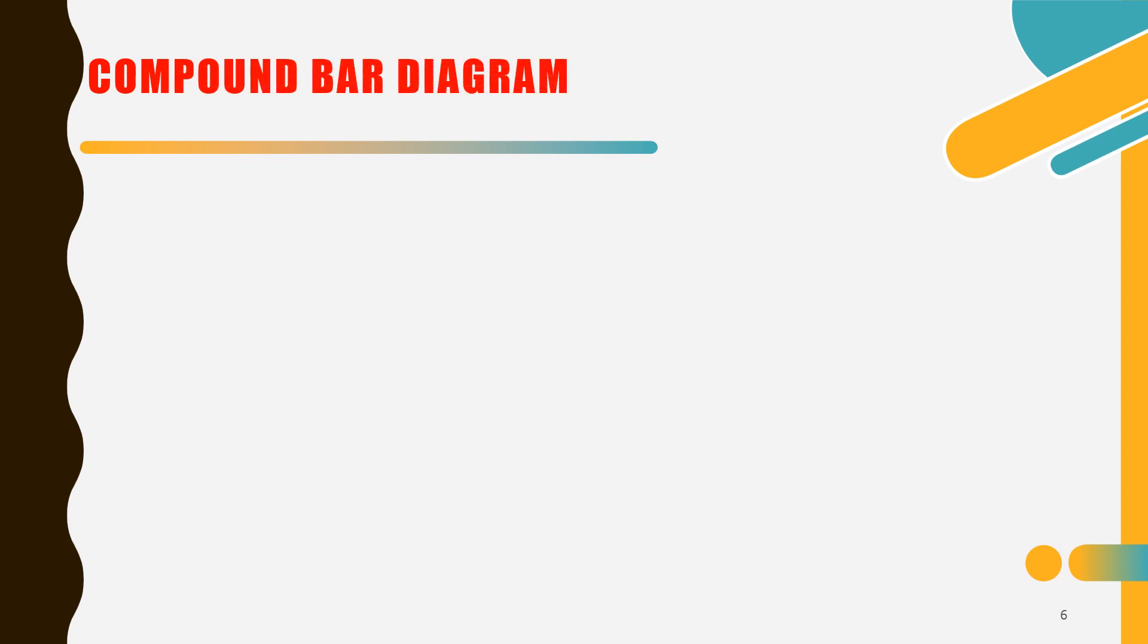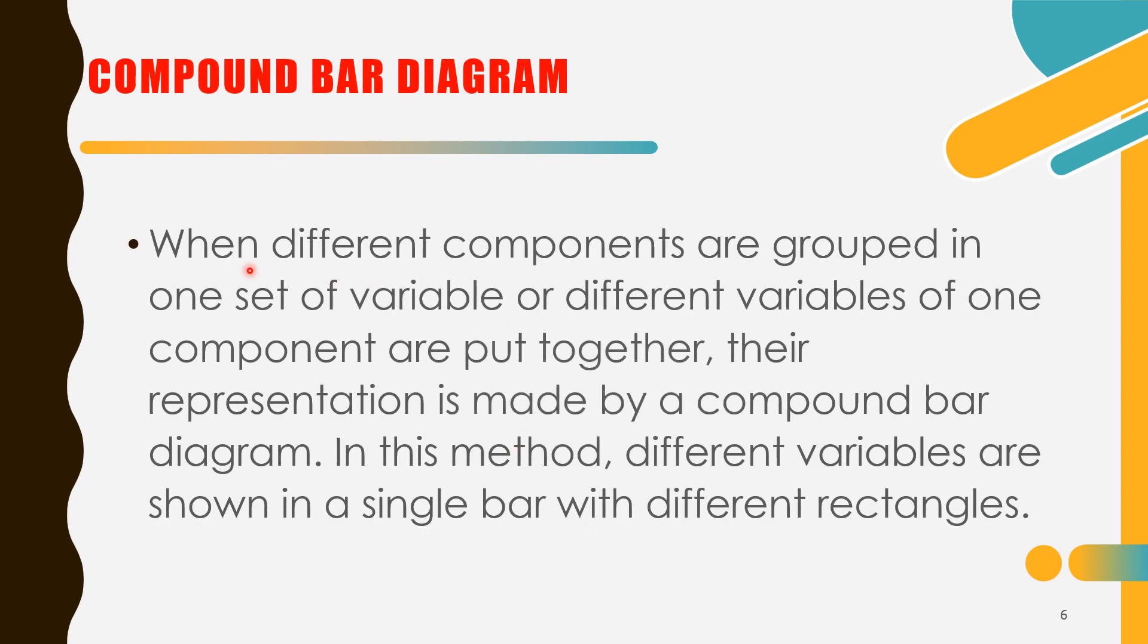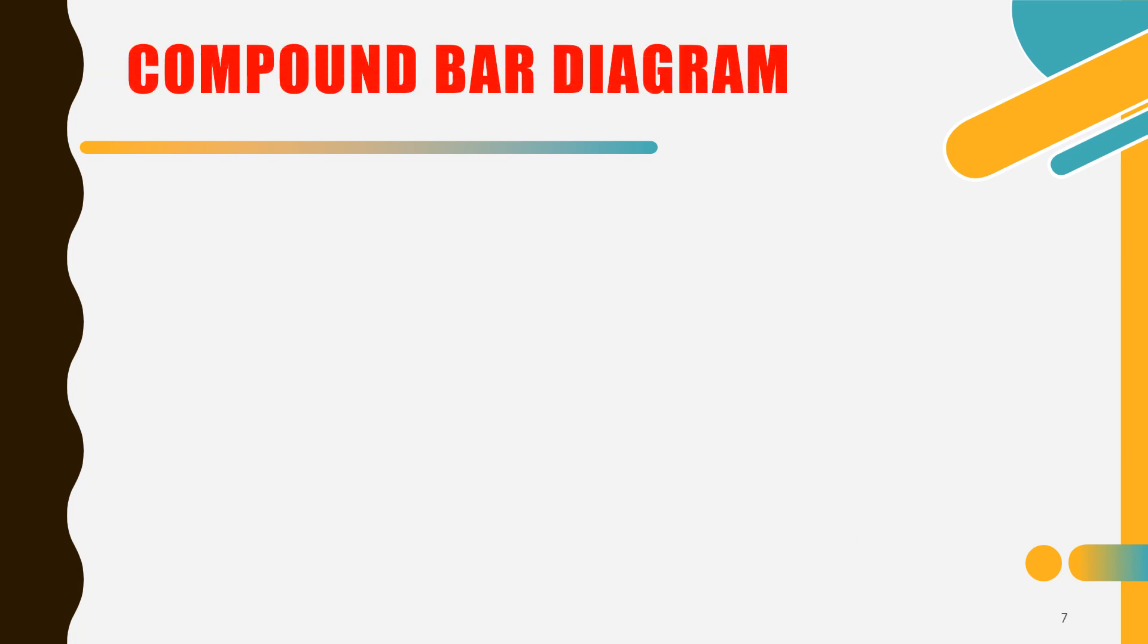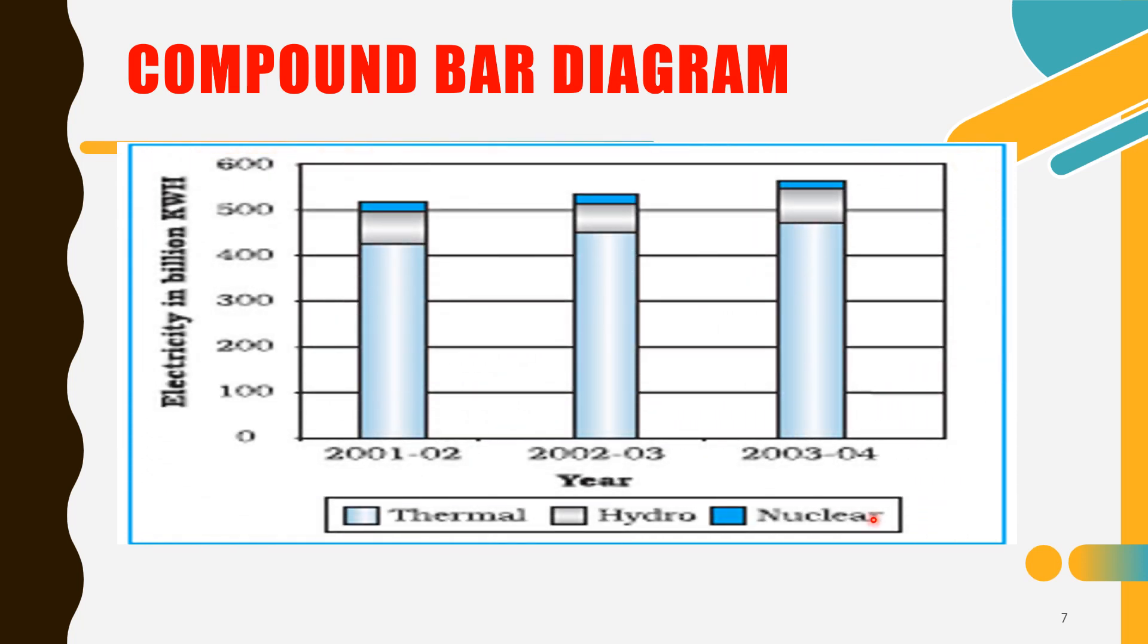Then we have compound bar diagram. When different components are grouped in one set of variables or different variables of one component are put together, the representation is made by a compound bar diagram. In this method, different variables are shown in a single bar with different rectangles. We have here a compound bar diagram. This is an example. We have electricity in billion per kilowatt hour and the year. This is a compound. Notice it has blue, white, and then here. That means it's colored thermal, hydro, and nuclear. Notice thermal is more higher than the two.